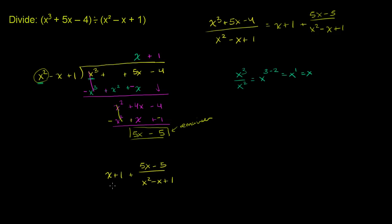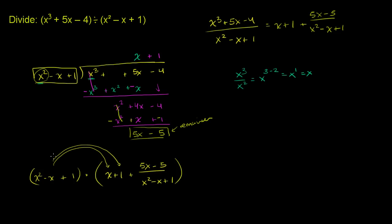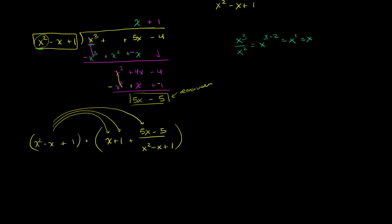We can check that this works. If we take this expression and multiply it by x squared minus x plus 1, we should get x to the third plus 5x minus 4. Let's distribute the whole trinomial times each term. For the first term, we have x squared minus x plus 1 times x: that gives x to the third, minus x squared, plus x. Then multiplying the whole thing times 1 gives plus x squared minus x plus 1. And since this matches the denominator, it cancels with that, and we're just left with the numerator: plus 5x minus 5.